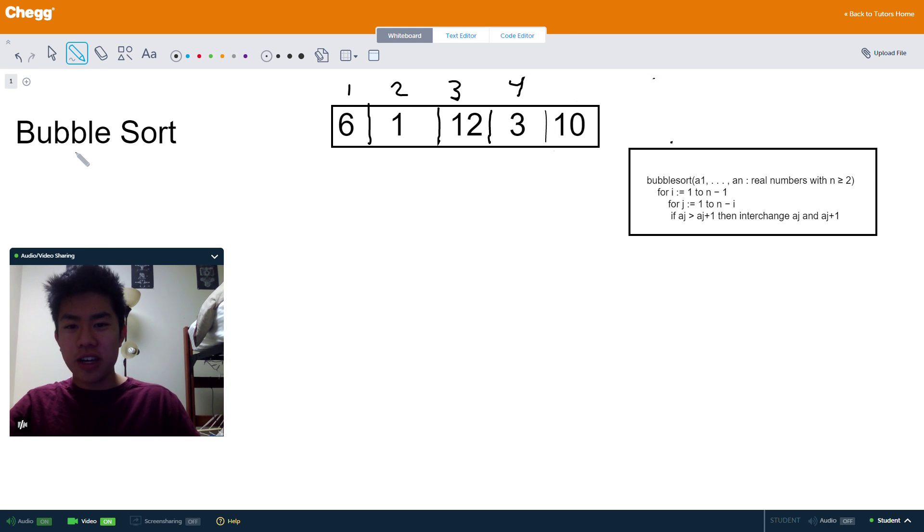Hey everybody, my name is Tam Nguyen. I'm a tutor here at Chegg. I mainly teach math and a little bit of computer science. And today is going to be one of those computer science days because we're going to be talking about bubble sort.